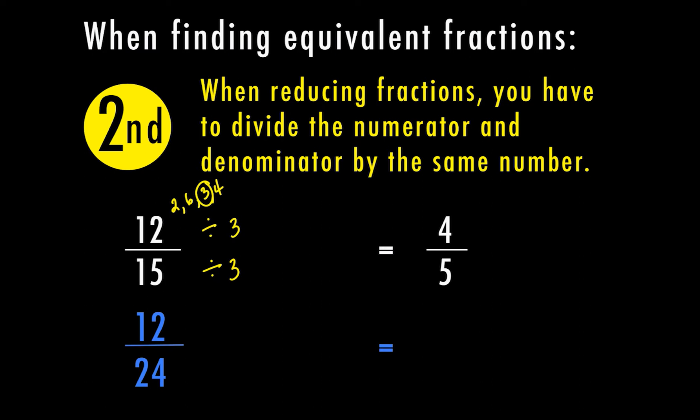Let's look at another example: 12 over 24. This time I can see — does my numerator go into my denominator? In this case, 12 goes into 24 two times. So since 12 goes into 24 equally, I can divide the top and the bottom by 12. 12 divided by 12 is 1, and 24 divided by 12 is 2, so this reduces to 1 half. So 4 fifths is the simplest form of 12 fifteenths, and 12 over 24 is equivalent to 1 half.